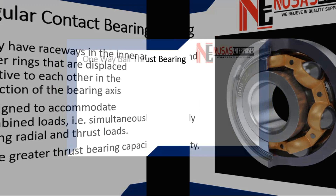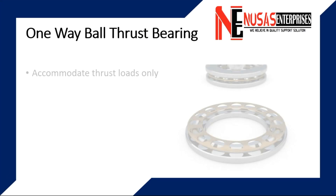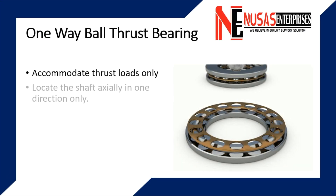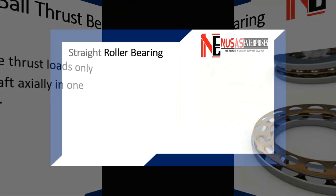One way ball thrust bearings are used to carry thrust loads only. As their name indicates, they can accommodate thrust loads and locate the shaft axially in one direction only.